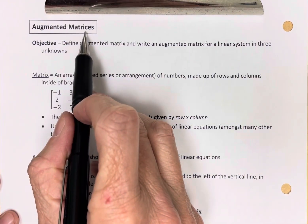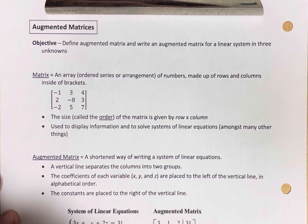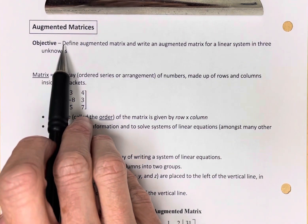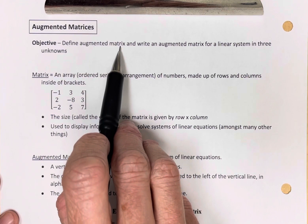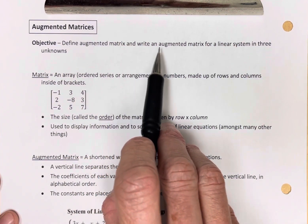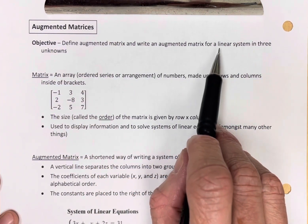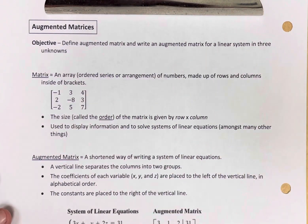Augmented matrices. Our objective here, we want to first define an augmented matrix, and then we want to write an augmented matrix for a linear system in three unknowns.